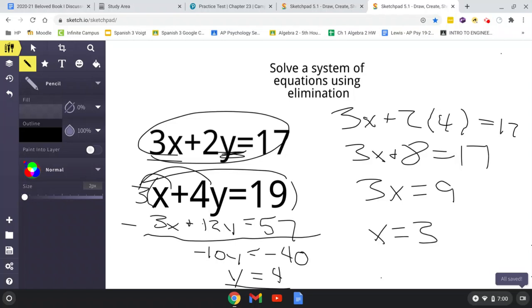Now, if you were to put your answer in a coordinate pair, if that's what the answer requires, it's (3, 4). And that is how to solve using elimination.